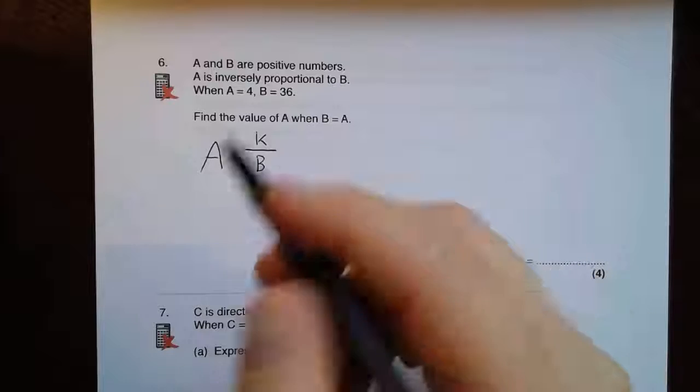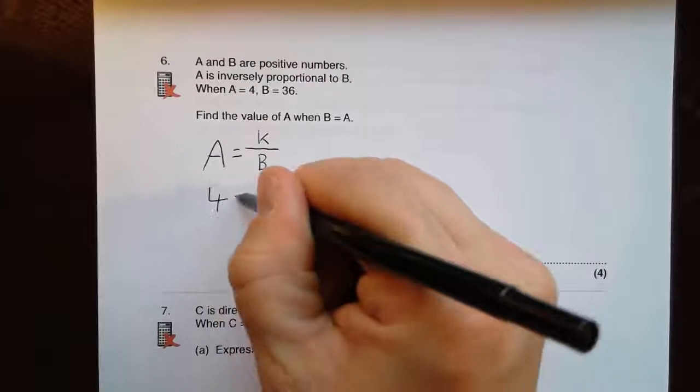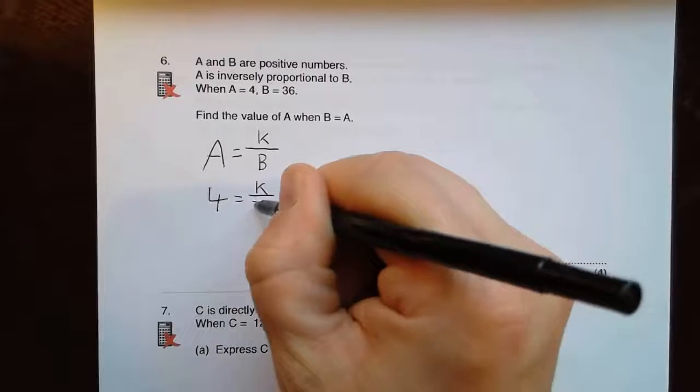Substitute in the values I know. So I'm going to substitute these ones in. So 4 equals k over 36.